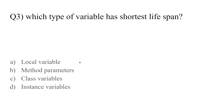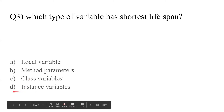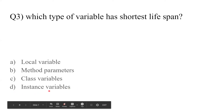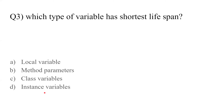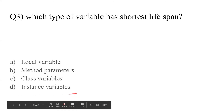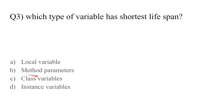Question: which type of variable has the shortest lifespan? Class variables are accessible throughout the class. Instance variables depend on where we define them, but mostly we define them as soon as we start writing the class. Method parameters are accessible throughout the method. Local variables have the shortest lifespan when compared among the four.